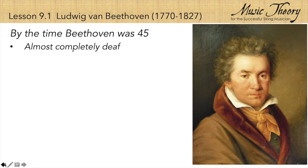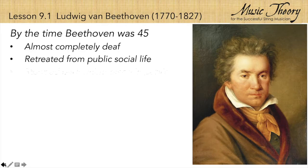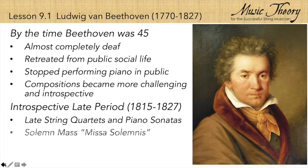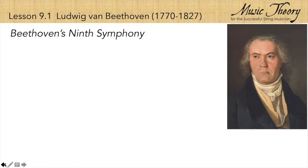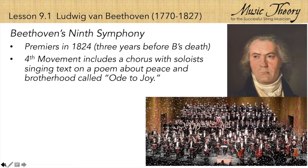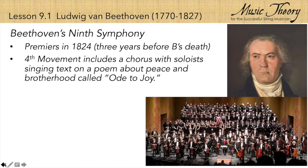By the time he was 45, Beethoven was almost completely deaf. He retreated from public social life and stopped performing piano in public, which gave him more time to compose. This period is known as his late period, when he composed his most challenging string quartets and piano sonatas, his Missa Solemnis, and the Symphony No. 9. Beethoven wrote his Ninth Symphony just three years before his death, and it's recognized as one of his greatest achievements. This symphony includes a chorus singing a hymn of peace and brotherhood known as the Ode to Joy.